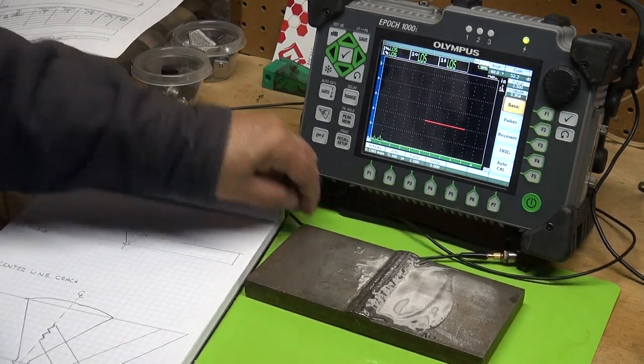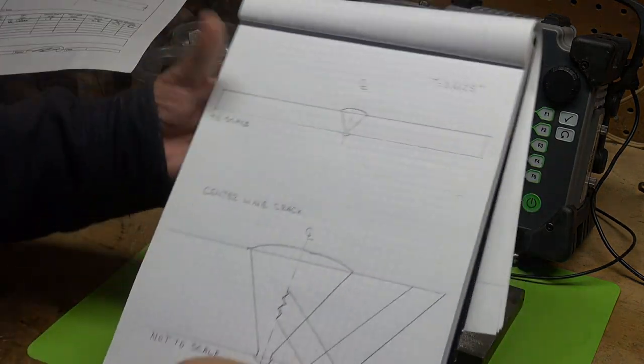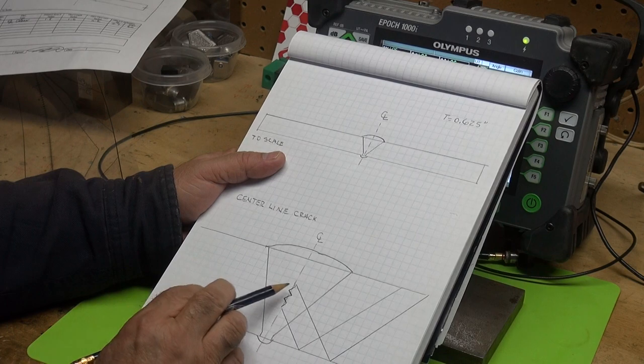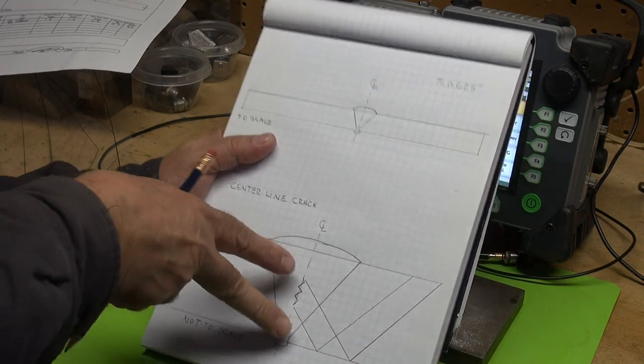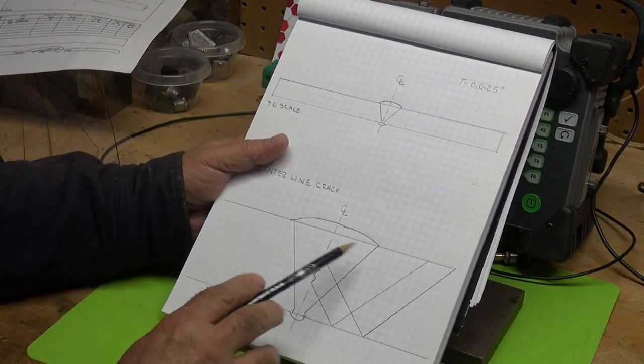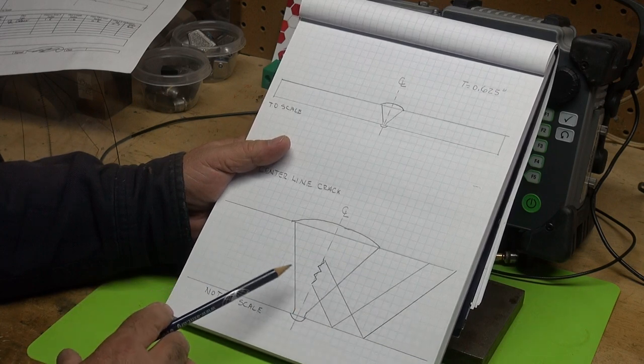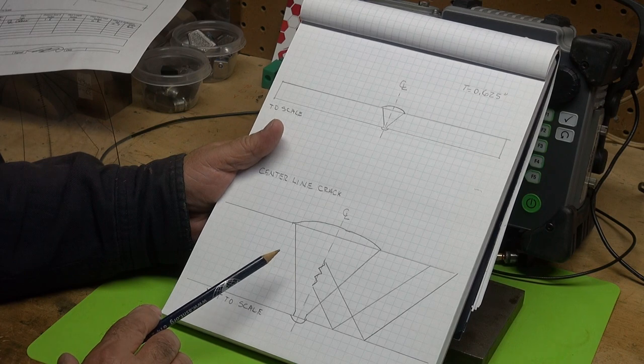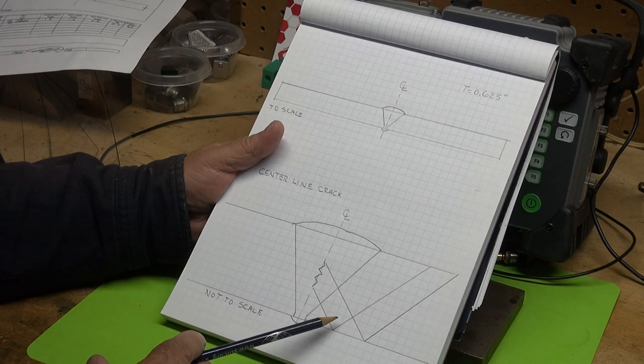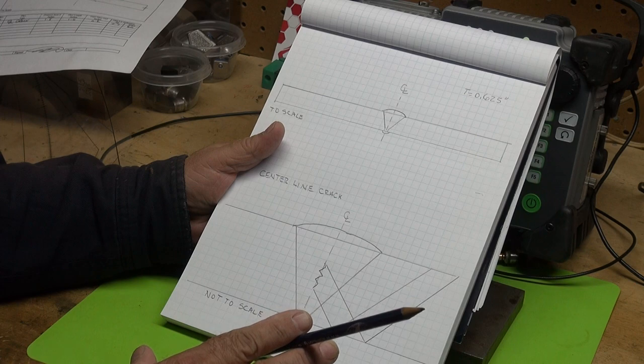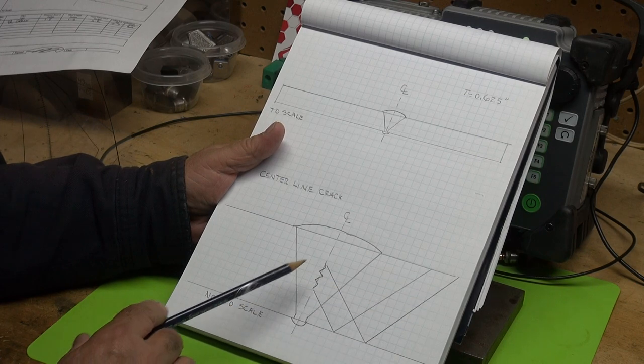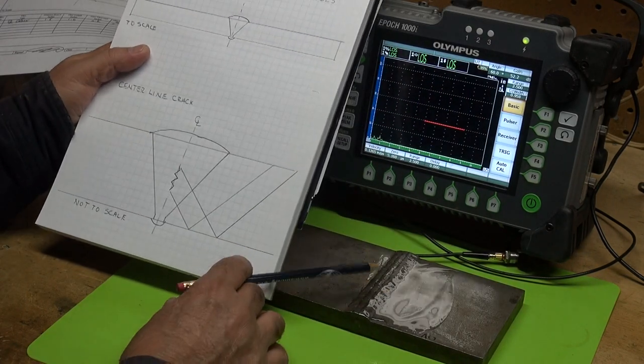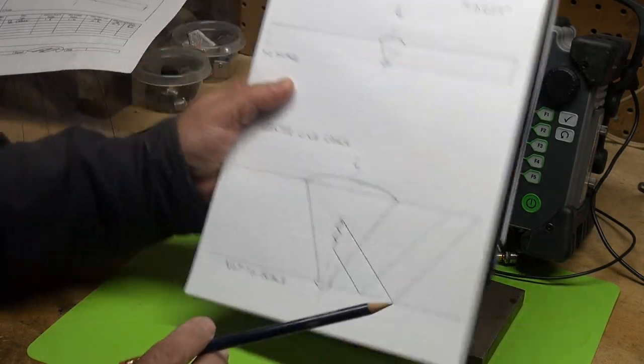I want to look at a weld with a centerline crack in it and measure the through wall of this crack. This is a simulated, not to scale drawing of a weld with a centerline crack in it. This is an exaggeration, and they use a 60 degree transducer to examine the body of the weld.